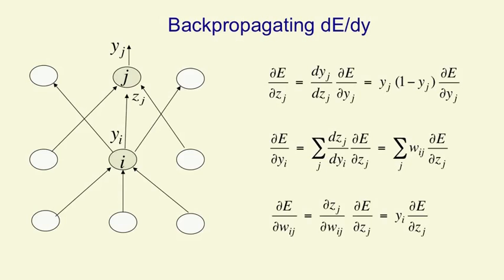Once we've got DE by DZj, it's very easy to get the error derivatives for all the weights coming into unit J. DE by DWij is simply DE by DZj times DZj by DWij, which is just the activity of the unit in the layer below, Yi. So the rule for changing a weight is: multiply DE by DZj by the activity coming in from the layer below. We've gone backwards through one layer, computing the derivative of the error with respect to the output in the previous layer, and we can clearly do that for as many layers as we like. That's the backpropagation algorithm — it efficiently computes, for every weight in the network, how the error will change on a particular training case as you change that weight.